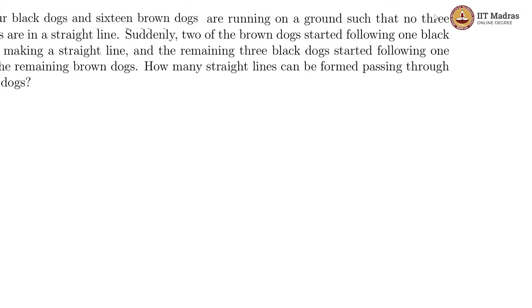In this question, they are saying that there are 4 black dogs and 16 brown dogs and they are running on a ground such that no 3 dogs are in a straight line.